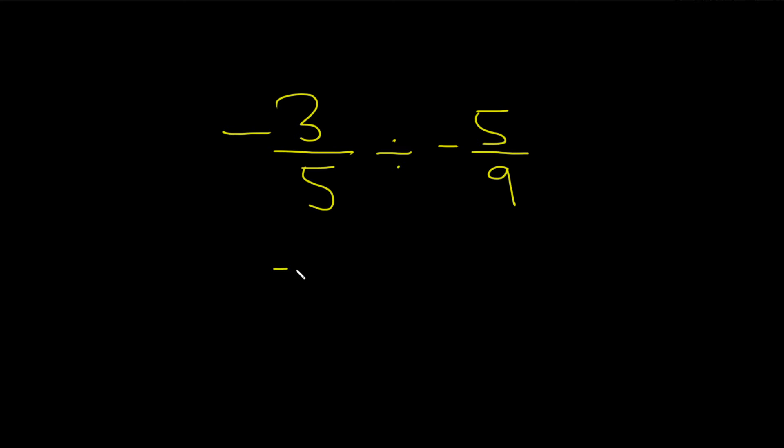I'm going to write this down again. Negative 3 over 5, and the trick is division is multiplication by the reciprocal. You just put a times here and then write down the reciprocal of this. The reciprocal means you flip it, so it's negative 9 over 5.